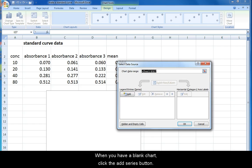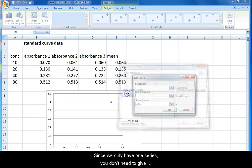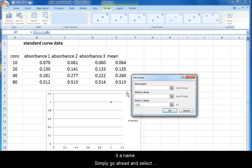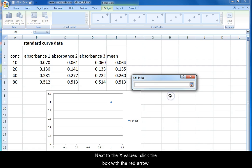When you have a blank chart, click the add series button. Since we only have one series you don't need to give it a name; simply go ahead and select the X and Y values. Next to the X values, click the box with the red arrow. This takes you to your sheet and now you can select the cells that contain the values you want on the X axis.